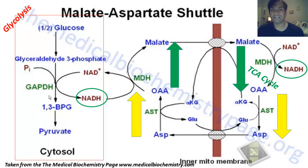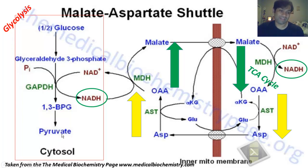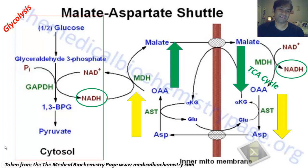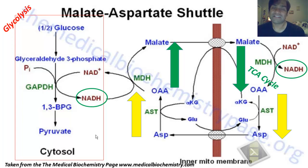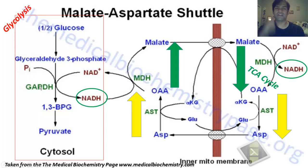This is normally a problem for prokaryotes and anaerobic microorganisms, because they need to find a way to regenerate oxidized NAD+ in order for GAPDH to continue. For anaerobic bacteria and other microorganisms, pyruvate is usually converted to lactic acid, ethanol, acetaldehyde, or some other form. But in aerobic eukaryotic organisms, the malate-aspartate shuttle is one way to bring NADH into the matrix and regenerate the oxidized cofactor to allow glycolysis to continue.